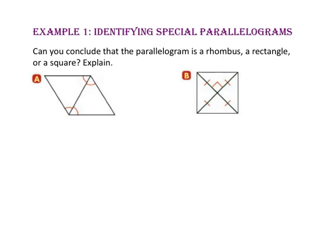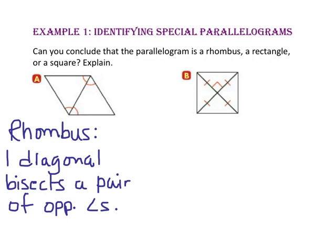In Example 1, we will identify special parallelograms. Can you conclude that a parallelogram is a rhombus, a rectangle, or a square? Explain. In Part A, notice that one diagonal bisects the opposite angles, so Parallelogram A is a rhombus.